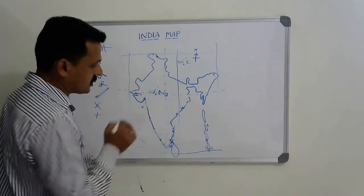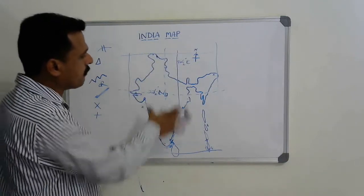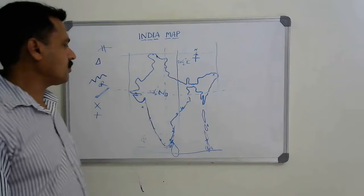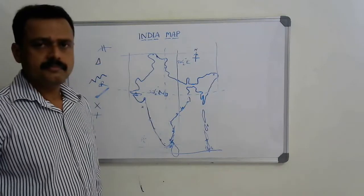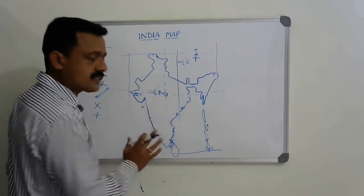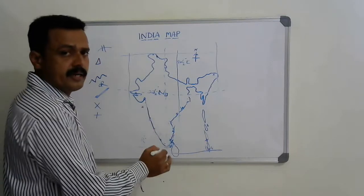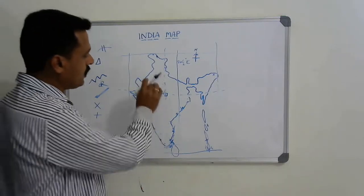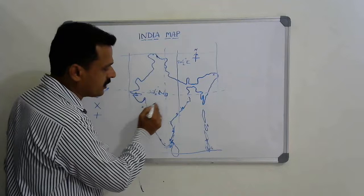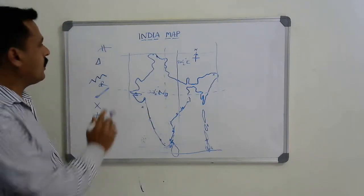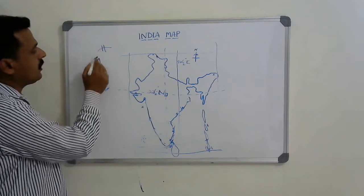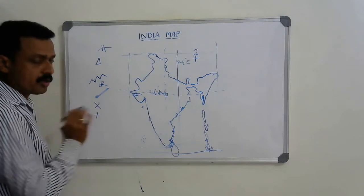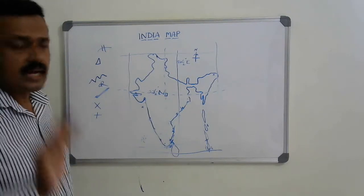Andaman and Nicobar Islands and Lakshadweep Islands you have to locate — this is a main requirement. Don't unnecessarily write places like Arabian Sea, Bay of Bengal, China, Pakistan — write only what is asked. Multi-purpose river valley projects are shown with the dam symbol, mountains with a triangle, mountain ranges with a series of triangles or shading, and places with a cross or plus mark.